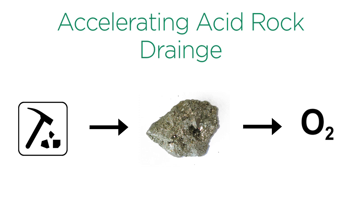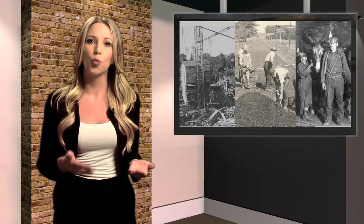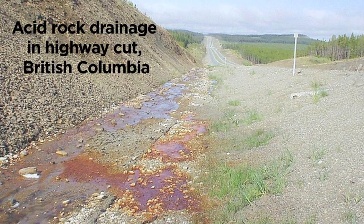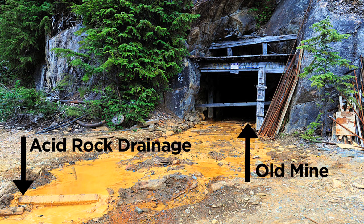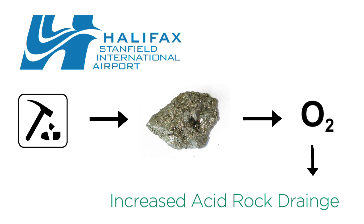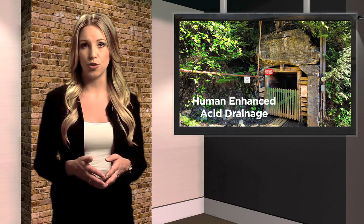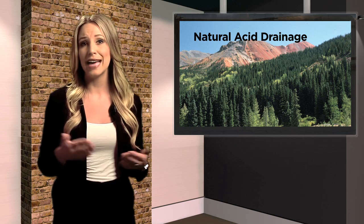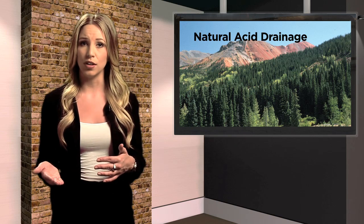Excavation like mining can accelerate the process of acid rock drainage because it locally exposes more sulfide minerals to atmospheric oxygen. Historically, in construction, road building, and the mining industry, there was limited recognition of this potential problem, and there are a number of sites and old mines where increased acid rock drainage was created by excavation. For example, the Halifax, Canada International Airport was built on sulfide rocks which, when exposed, locally increased natural acid rock drainage. Many older mines also added to natural acid drainage and resulted in environmental impacts, although it is often difficult to know how much acid is naturally produced versus how much resulted from mine disturbance.